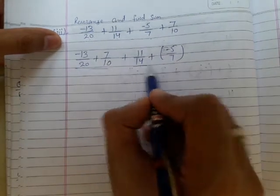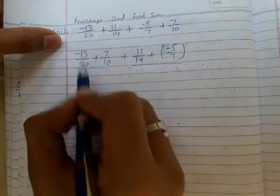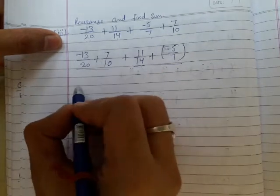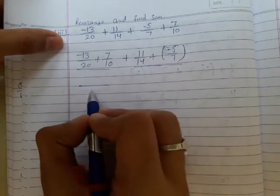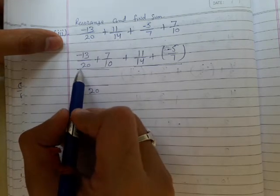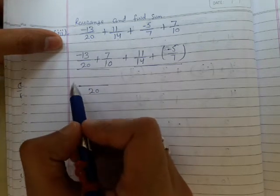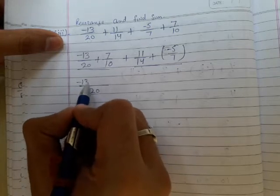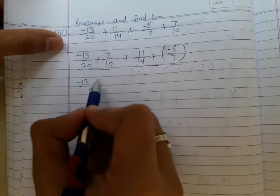We will add these two pairs of rational numbers, then add both results. The LCM of 20 and 10 is 20. 20 divided by 20 equals 1, times -13 equals -13. Then 20 divided by 10 equals 2, times 7 equals 14.